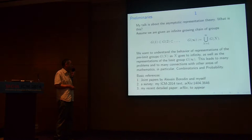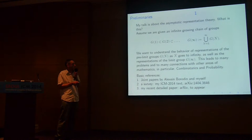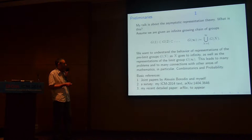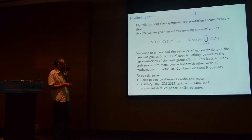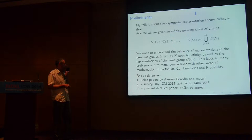The question is: what is this? The asymptotic representation theory studies certain big groups, or one can say inductive limit groups. We are given an infinite growing chain of groups, and G-infinity is the union, the inductive limit group. We want to understand the behavior of representations of the preliminary group G_n as n goes to infinity, and also what are the representations of the limit group G-infinity. This leads to many problems and connections with other areas of mathematics, in particular with combinatorics and probability.